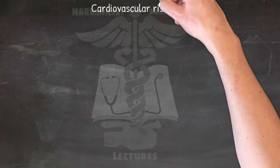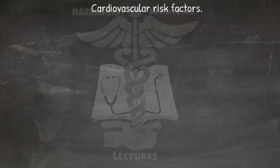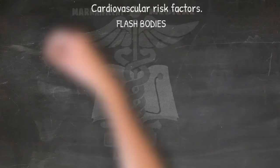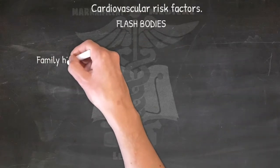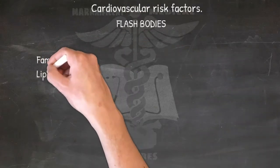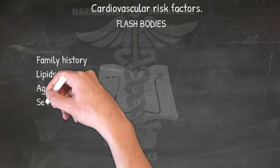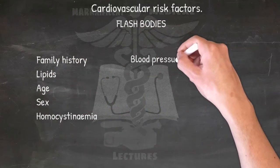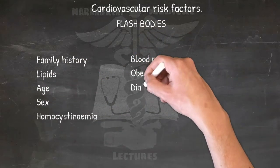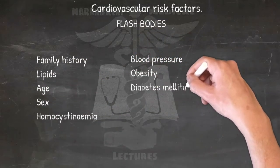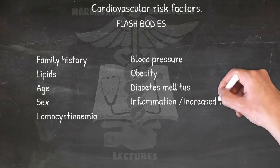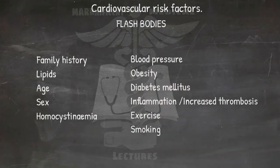Cardiovascular risk factors: FACTORS FLASH BODIES — Family history, Lipids, Age, Sex, Homocystinemia, Blood pressure, Obesity, Diabetes mellitus, Inflammation, Increased thrombosis, Exercise, and Smoking.